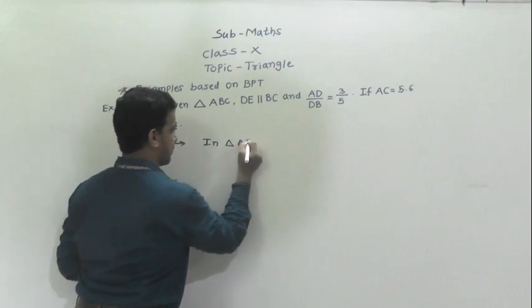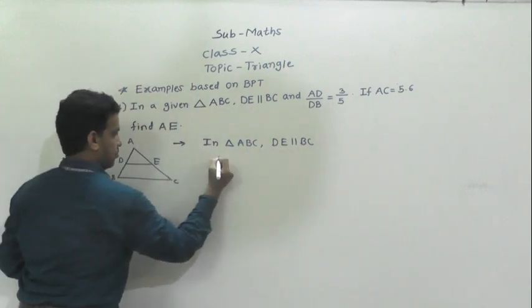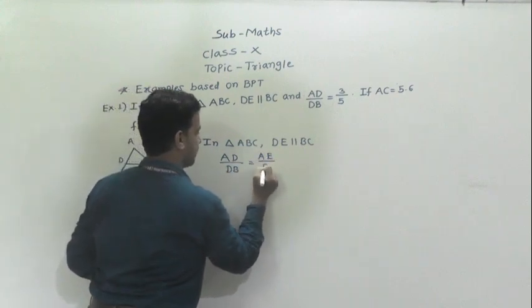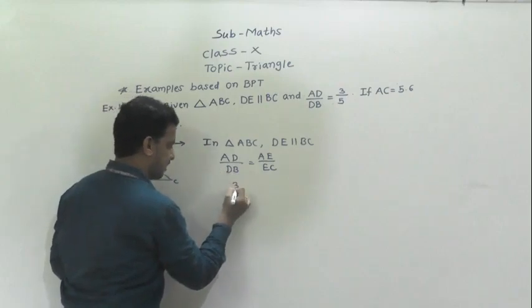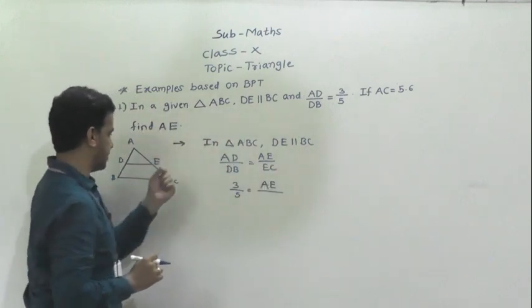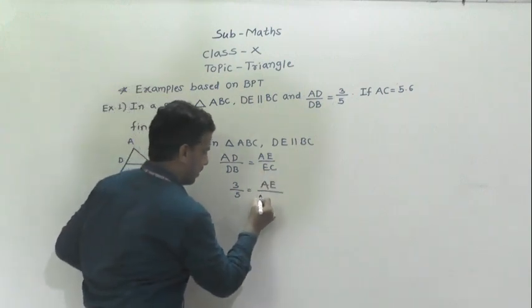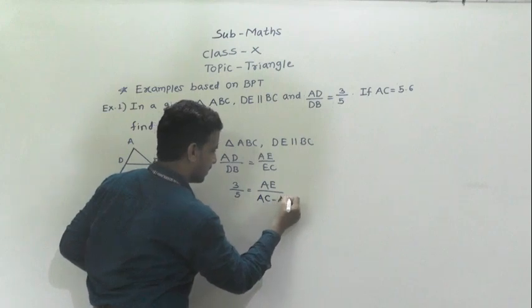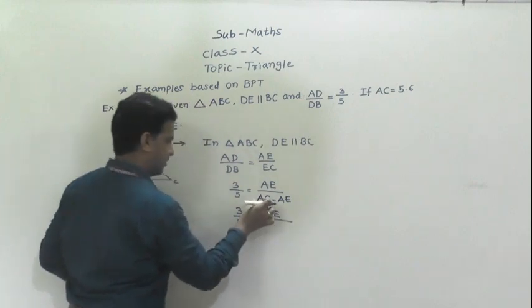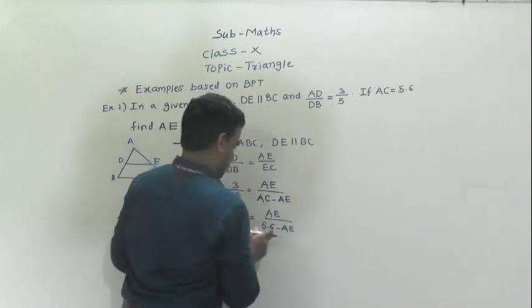In triangle ABC, DE is parallel to BC. By BPT, we can write AD by DB is equal to AE by EC. Here AD by DB is given as 3 by 5, so 3 by 5 is equal to AE by EC. Now AC is given as 5.6 and we have to find AE. So EC we can write as AC minus AE. Now 3 by 5 is equal to AE divided by 5.6 minus AE. Cross multiply this.